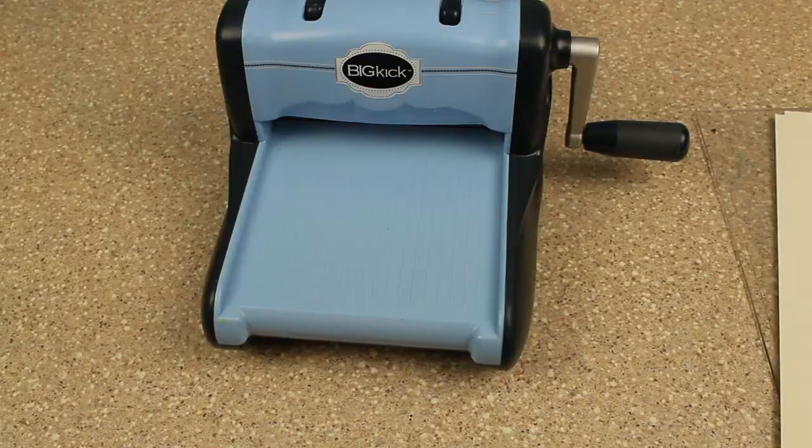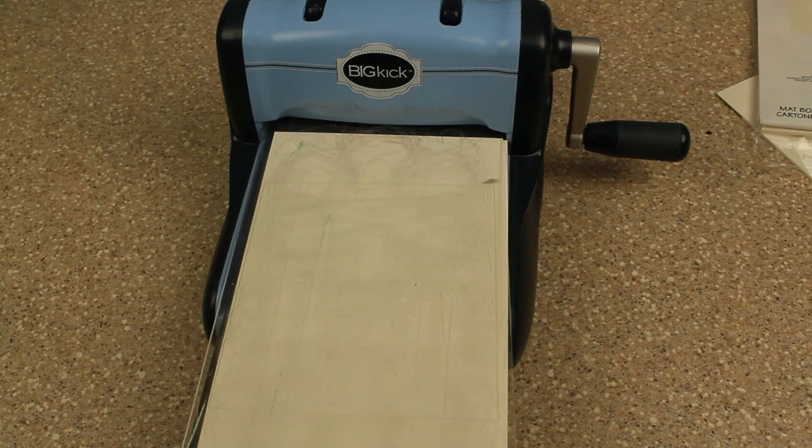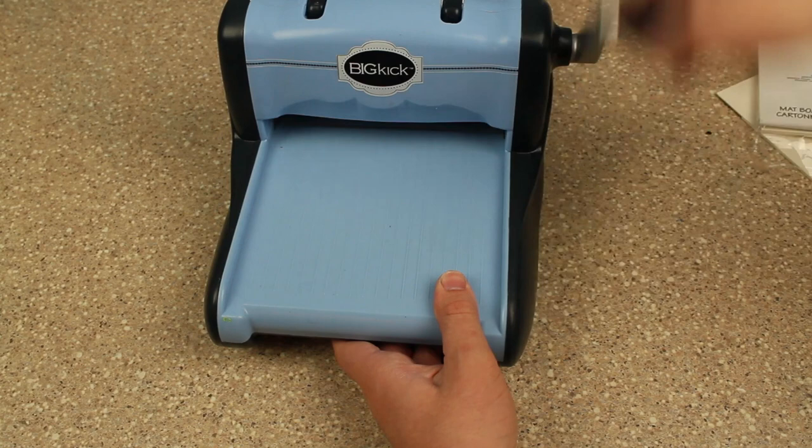The first thing you'll want to do is to make a sandwich by taking a cutting plate, then your die, then your mat board, and then another cutting plate. This is how you'll get the best cut every single time. So you'll just want to run this through your big shot or big kick. I'm using a big kick today and it will come out.